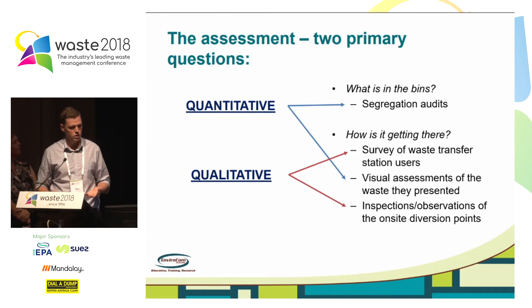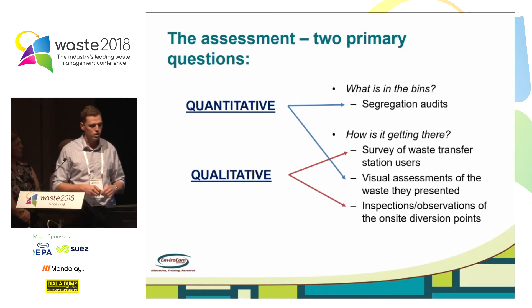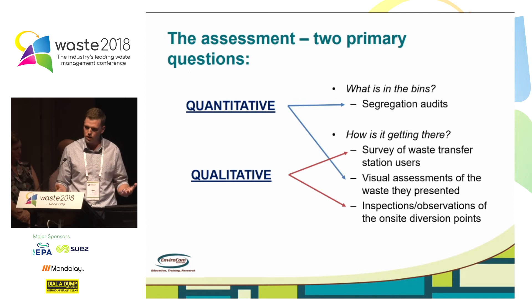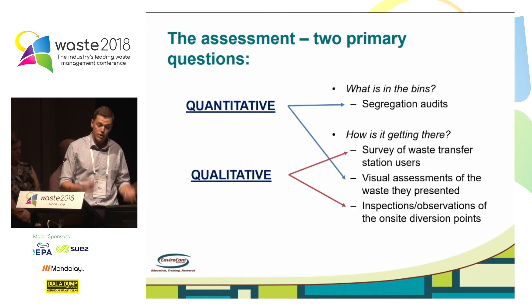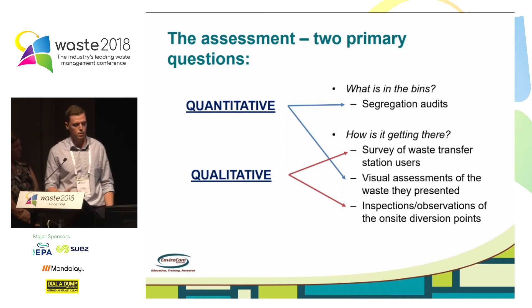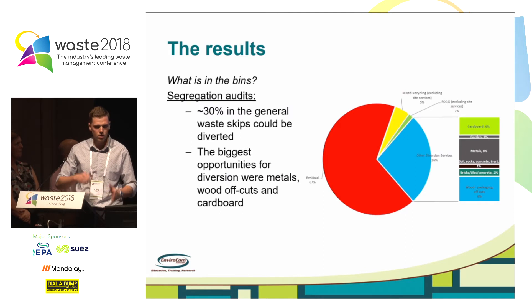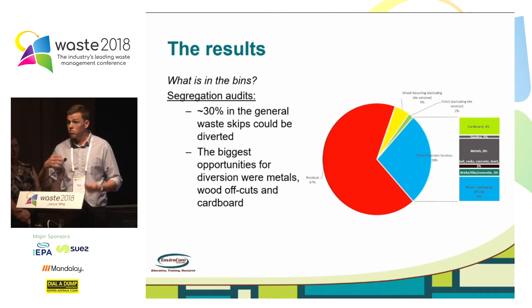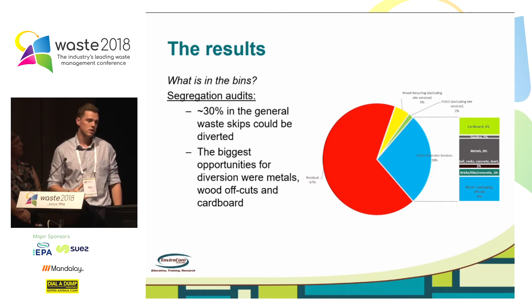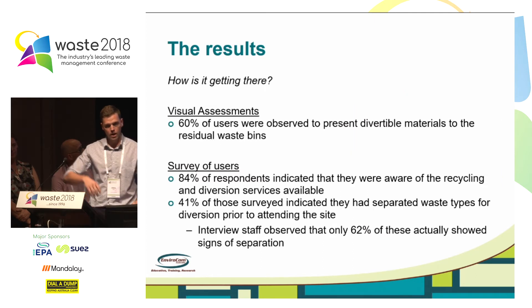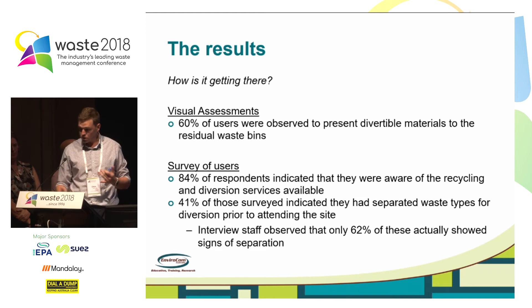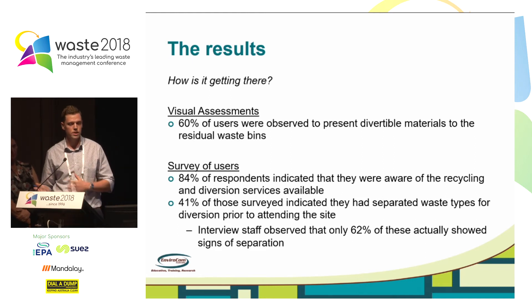The assessments asked two primary questions to establish whether the site was effective in diverting materials: what's in the bins, and how is it getting there? We used a combination of quantitative and qualitative data — a segregation audit sorting waste in the general waste skips, a survey of users, visual assessments of the waste they presented such as trailer loads being brought in, and inspections of the site itself. The segregation audits showed that a significant amount of material in the residual waste skips was divertible using current site services — about 30% of the general waste could be diverted, with the biggest categories being metal, cardboard, and wood offcuts.